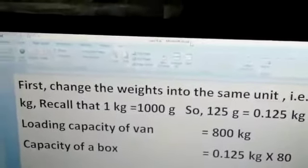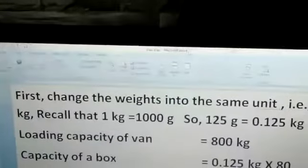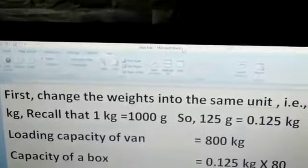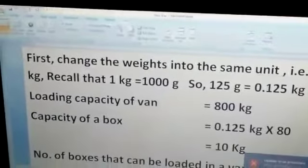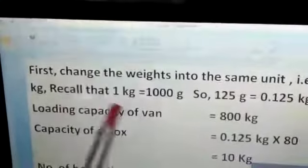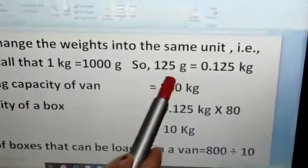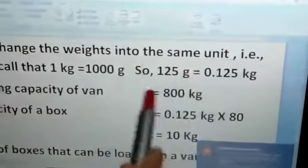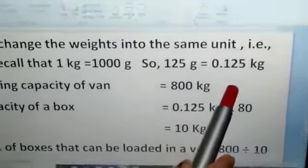The capacity, the weight of biscuit packet is given in grams but the capacity of van is given in kilogram. So it is better to convert kilogram into gram. First change the weight into the same unit. We all know 1 kilogram is equal to 1000 grams. So 125 grams we have converted the smaller into greater one. So we will go for division. 125 divided by 1000 will give you 0.125 kilogram.